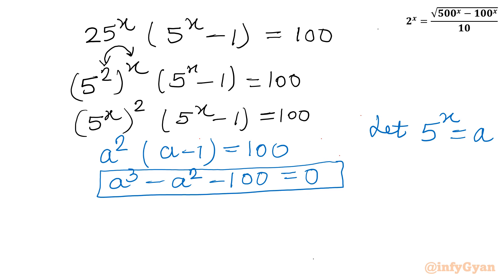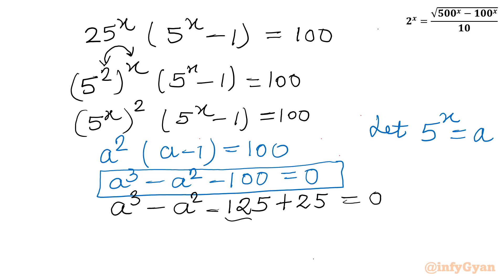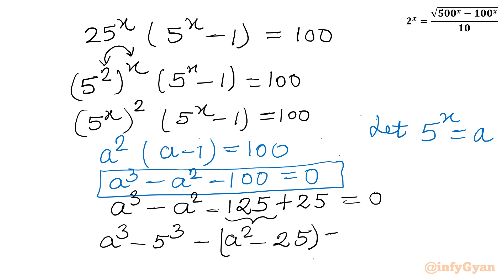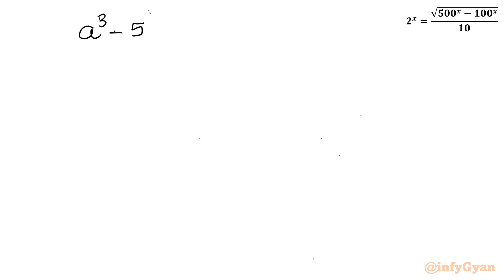I will split -100 as -125 + 25. So I write: a^3 - a^2 - 125 + 25 = 0. Now 125 = 5^3, so I write (a^3 - 5^3) then -(a^2 - 25) = 0. Taking -1 common from the second group: (a^3 - 5^3) - (a^2 - 25) = 0.